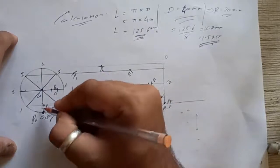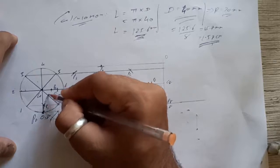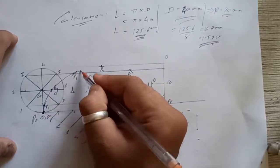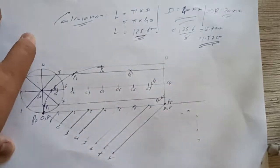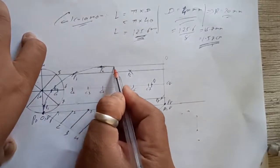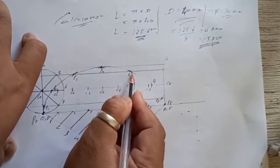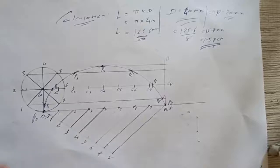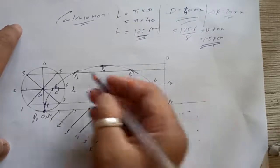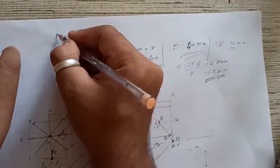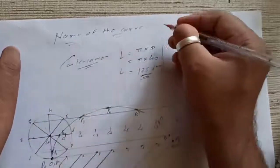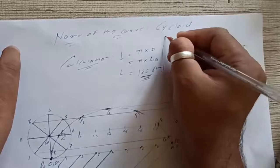Use only a French curve to join P0 to P1, P1 to P2, P2 to P3, P3 to P4, P4 to P5, P5 to P6, P7 and P8. The name of this curve is Cycloid.